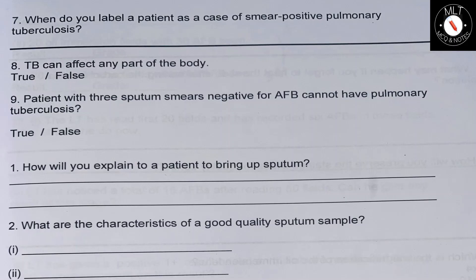Next question: TB can affect any part of the body — is it true or false? It is false, because TB does not affect hair and nails. Another question: A patient with 3 sputum smears negative for AFB cannot have pulmonary tuberculosis — true or false? This is also false, because smear-negative TB patients also exist.